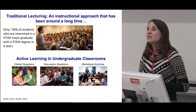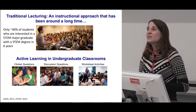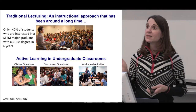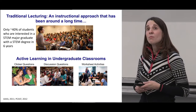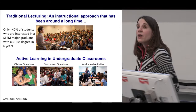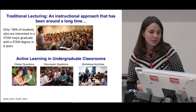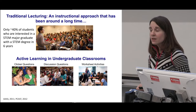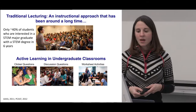Especially in the U.S., what we are finding is that we are losing a lot of students with this type of instruction. Only about 40% of students who are interested in a STEM major when they start college will graduate with a STEM degree six years later. Most students are leaving between the first and second years, and students who are underrepresented in STEM fields are leaving at even higher rates than their peers.